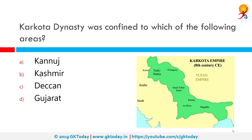The Karkota dynasty was confined to which of the following areas? The correct answer is Kashmir. The Karkota Empire was a Kashmiri dynasty that was a major powerhouse in the Indian subcontinent during the 7th and 8th centuries. It was founded by Durlabha Vardhana during the lifetime of Harsha Vardhana, and the dynasty marked the rise of Kashmir as a power in northern India.